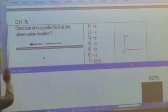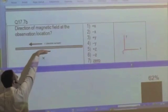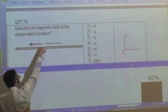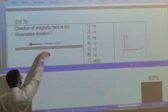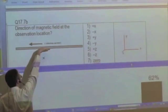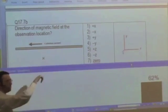So two ways to do it. You can either say I is that way, R is pointing from the source to the observation location, so I delta L cross R thumb points in.